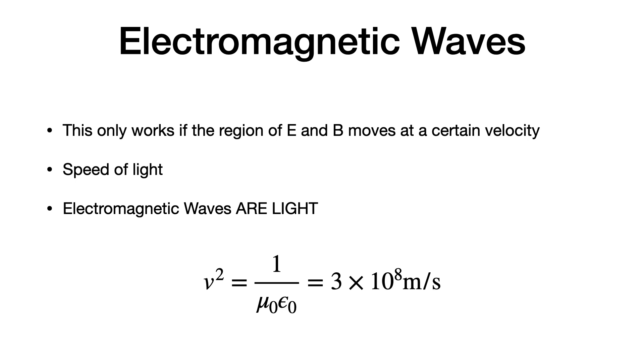And you see here, you can actually calculate the speed of light. It depends on the magnetic constant μ₀ and the electric constant ε₀. If you take this particular expression, you get 3 times 10 to the eighth meters per second. That is the speed of light.